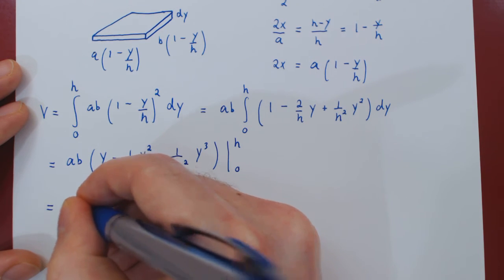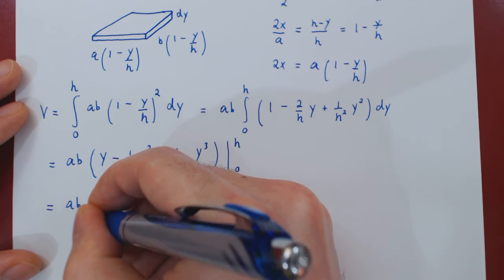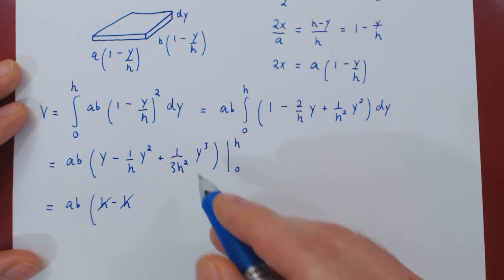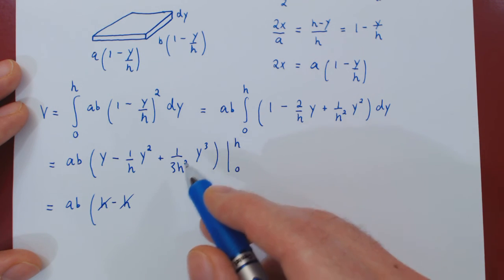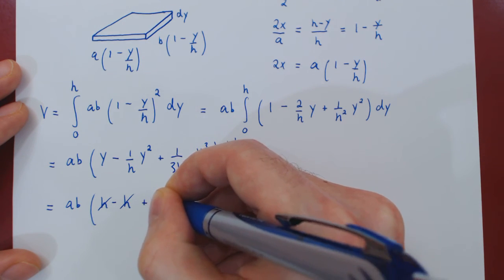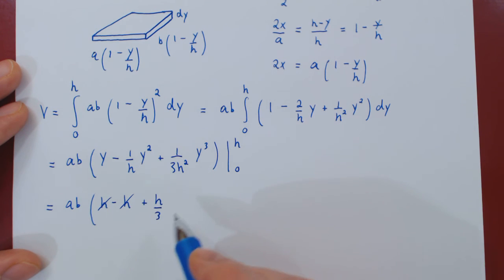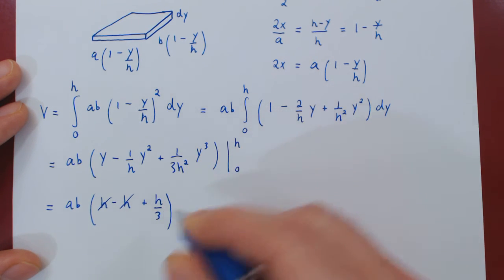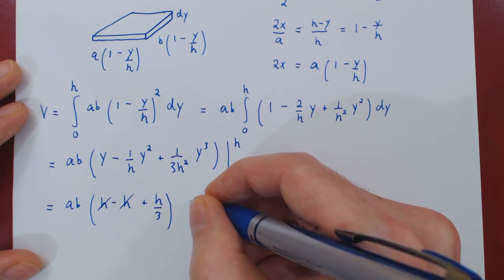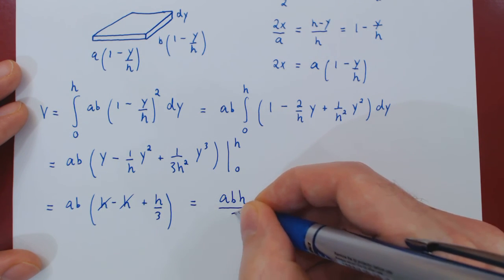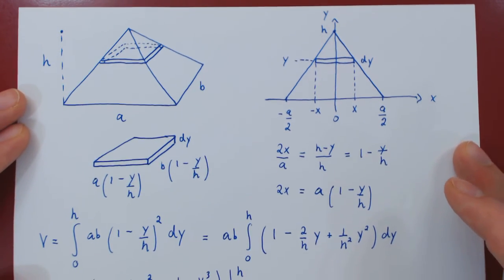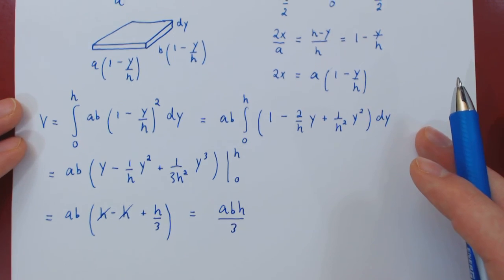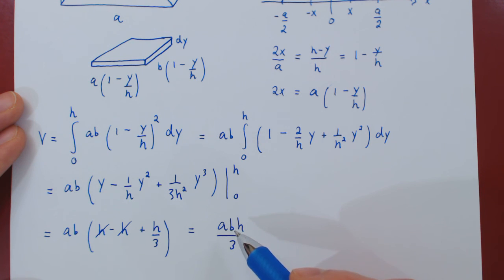Replacing y by h: h minus h²/h gives h minus h, so those cancel; and h³/h² is h, giving h/3. Subtracting the antiderivative at y equals 0, which is of course 0, we are left with quite simply abh/3. This is the volume of an arbitrary pyramid where the base is rectangular with sides a and b and whose height is h — a remarkably elegant solution and a remarkably simple result: abh/3.